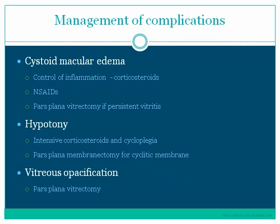Other complications of uveitis include cystoid macular edema, which is best prevented by adequate use of corticosteroids — use enough, soon enough, and probably even long enough. Once the edema has occurred, it can be controlled by corticosteroids and non-steroidal anti-inflammatory drugs. In some cases, pars plana vitrectomy may be needed, especially if associated with persistent vitritis.